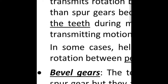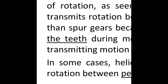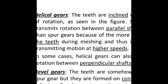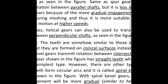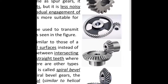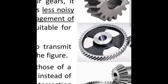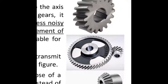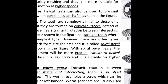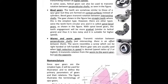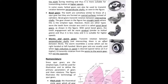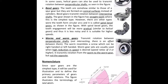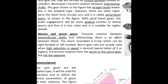A transmission or gear set can be used to change speed, torque, direction of rotation, direction of a power source, or the type of motion. The most common configuration for a gear is to mesh with another gear. However, a gear can also mesh with a non-rotating toothed part called a rack, thereby producing translation instead of rotation.